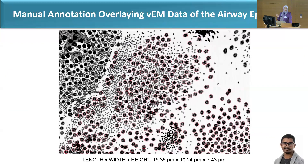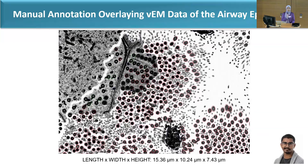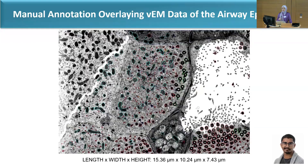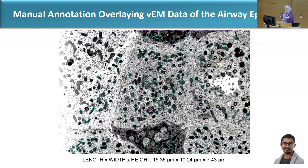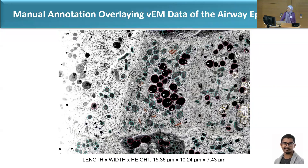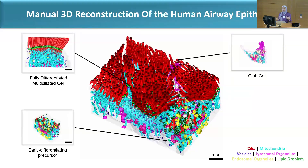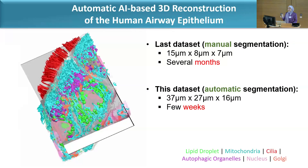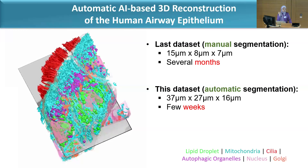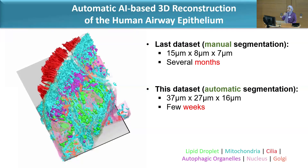Here is an example of raw data that was manually segmented by a grad student in our lab — you can see how much time this takes. This is the manual 3D reconstruction, which helps us identify different cells and analyze organelle contact. The problem with this approach is it took several months to complete. With deep learning, a volume more than double the size was processed automatically in just a few weeks of training.